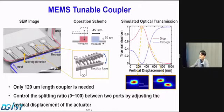By modulating the displacement of the two waveguides, we can control the splitting ratio of the two ports. You can see on the right side the simulated result of optical transmission. We can achieve full 0 to 100% tuning while we just move one micrometer displacement.